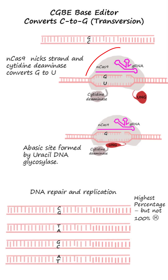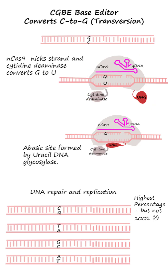Base editors involving transversions are also being developed. In the cytosine-to-guanine base editor, nCas9 is fused to a cytidine deaminase and a uracil DNA glycosylase. The guide RNA places the base editor at the targeted site, and the cytidine deaminase converts cytosine to uracil, while uracil DNA glycosylase eliminates the uracil from the DNA and creates an abasic site.